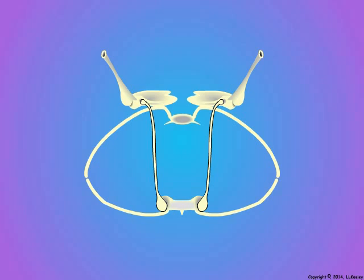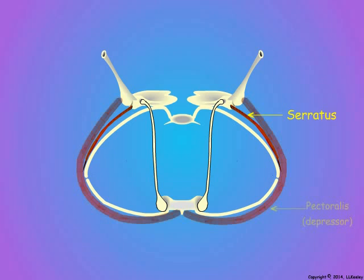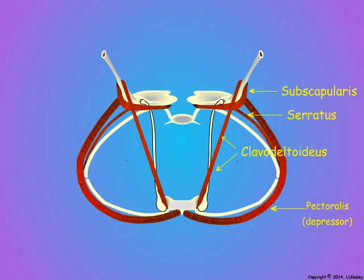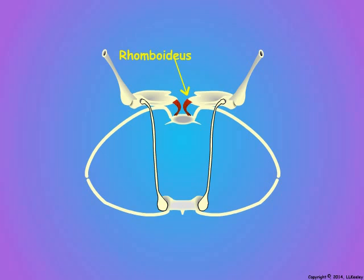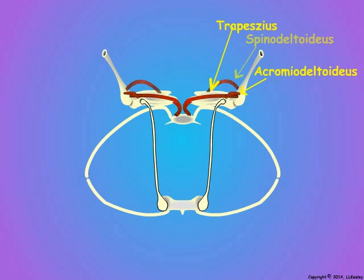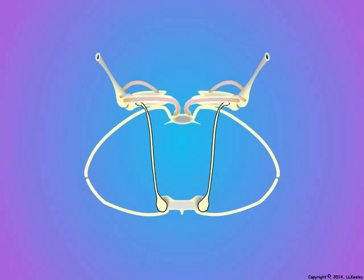Like birds, bat flight muscles attach directly to the wing bones. Whereas birds use only one muscle each for the upstroke and downstroke, bats use four muscles each. The serratus ventralis thoracis pulls the scapula in its lateral ventral movement. In the downstroke, the pectoralis, the subscapularis, and the clavo deltoideus attach to the humerus and pull the wing down. During the upstroke, the rhomboideus muscle pulls the scapula back dorsally, and the acromio deltoideus, trapezius, and spinodeltoideus muscles elevate the humerus.